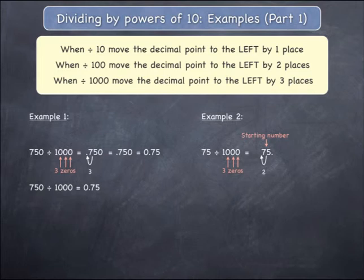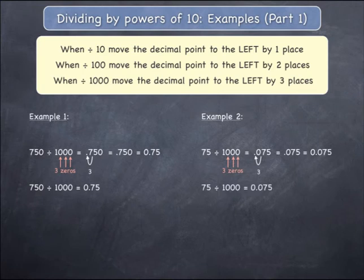At this point, there are no additional digits to jump over, and you are allowed to add a zero and jump over this zero with a third and final jump, giving an answer of 0.075. 75 divided by 1000 equals 0.075.